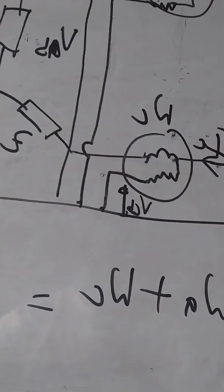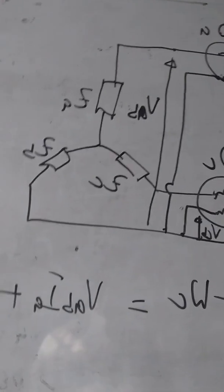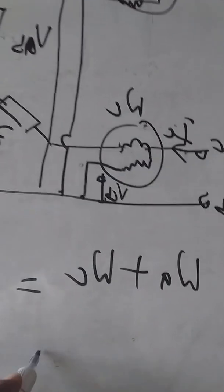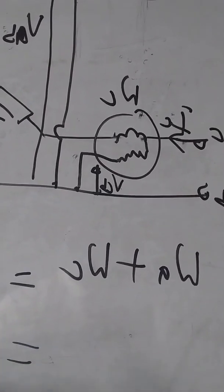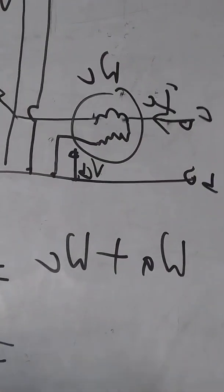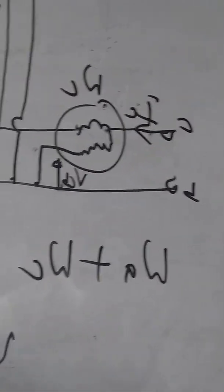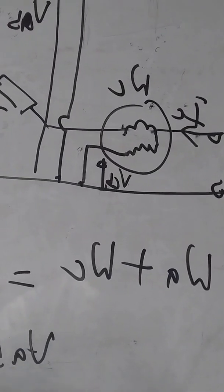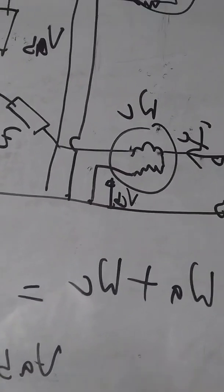Now let's split the voltages. V_AB is equal to V_AN minus V_BN.